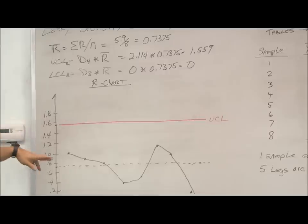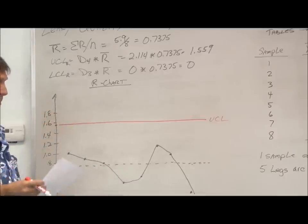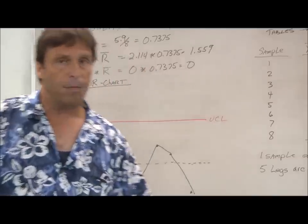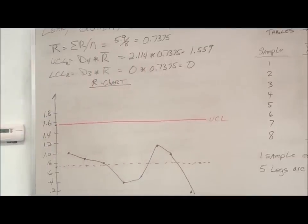Then I just take my ranges for my samples, or the average ranges, and I plot them out. We can see we're in control, and we're between the control limits. So everything is going fine with our woodworking example here.